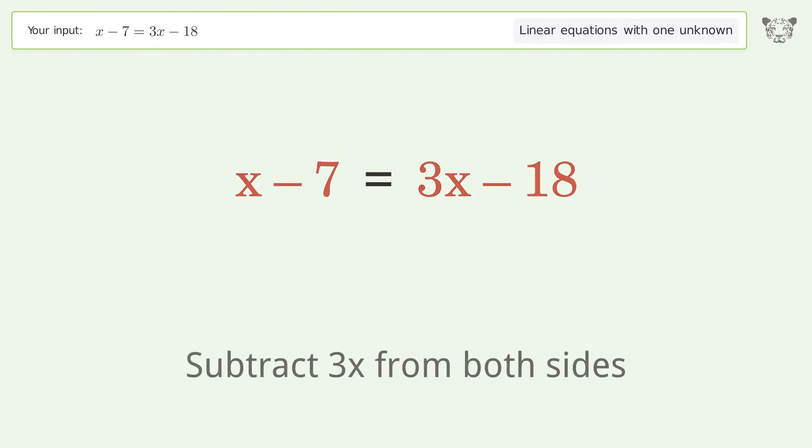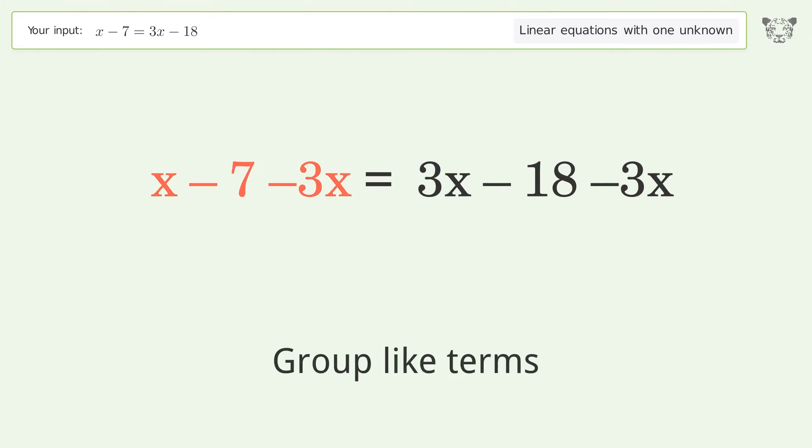Let's solve it step by step. Group all x terms on the left side of the equation. Subtract 3x from both sides.